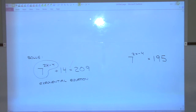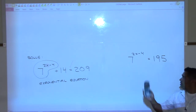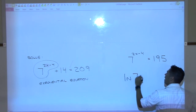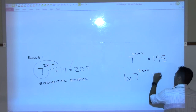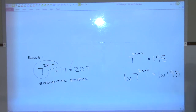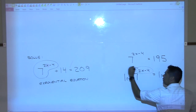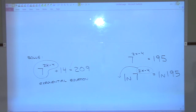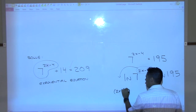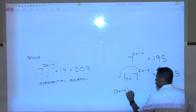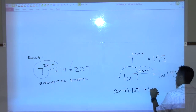Now is the crucial step. We are going to come in on both sides of the equation with a logarithm — the natural logarithm — because we have a key on our calculator that allows us to do natural logs. So I'm going to take the natural log of the left side, and whatever I do to the left side I must do to the right side, so I take natural log of 195 over here.